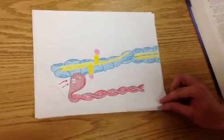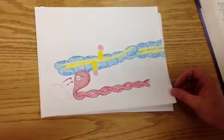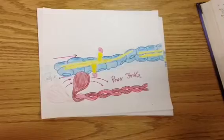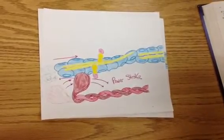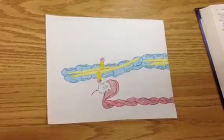Myosin releases the ADP and the phosphate and flexes into a bent, low energy position, tugging the thin filament along with it. This is called the power stroke. The head remains bound to the actin until it binds to a new ATP.